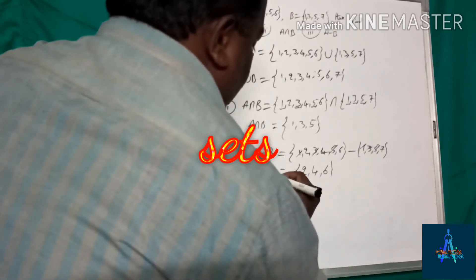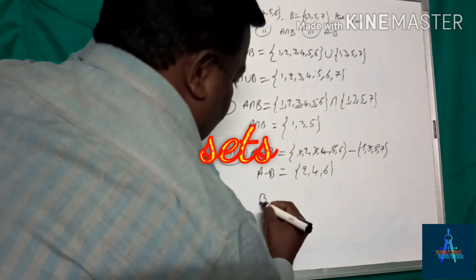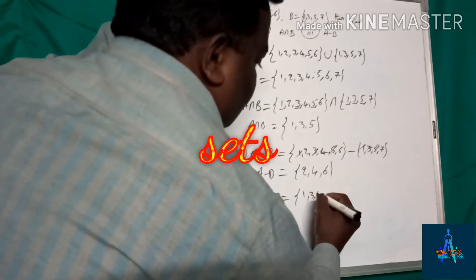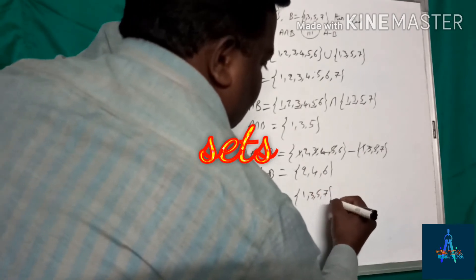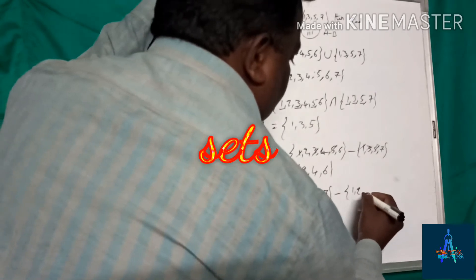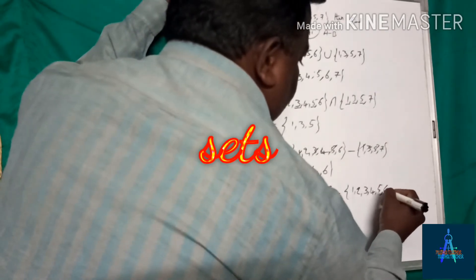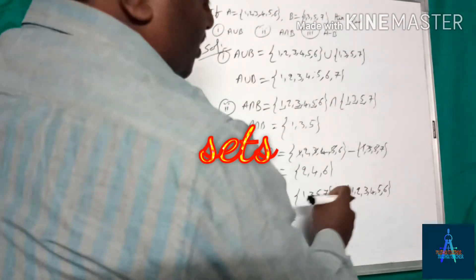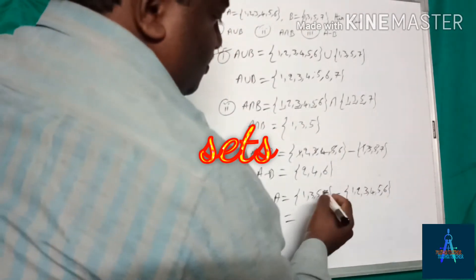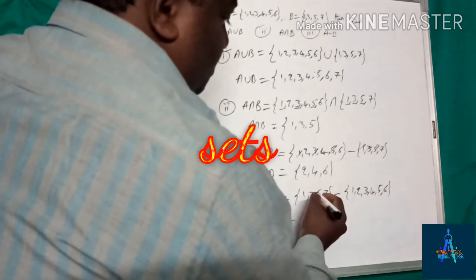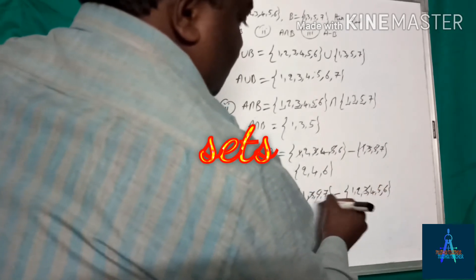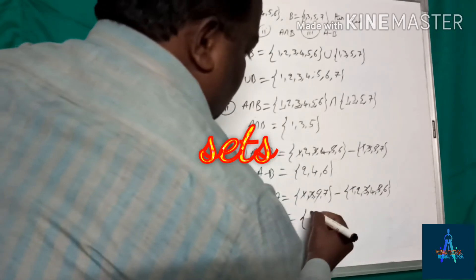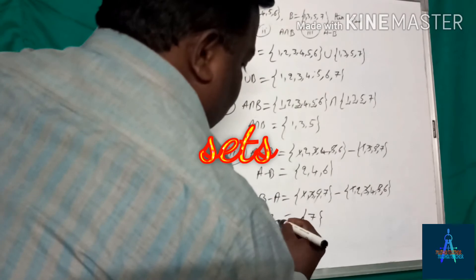Suppose if you want to find B minus A. You write B as {1, 3, 5, 7} minus A as {1, 2, 3, 4, 5, 6}. Here also, all the elements of B but not in A. The common elements are 1, 3, and 5, which are removed. So the remaining is only 7. This is B minus A.